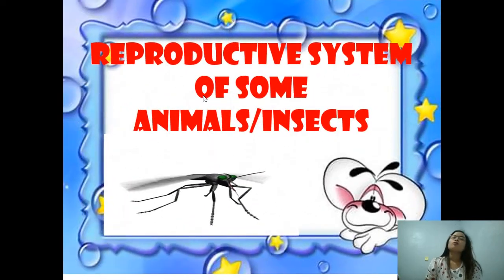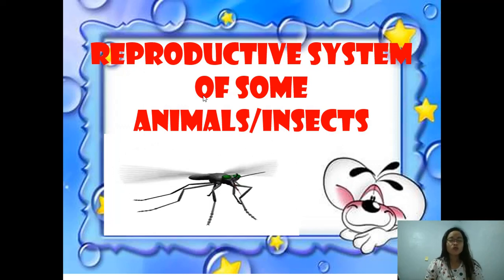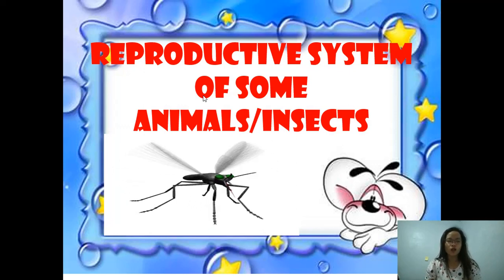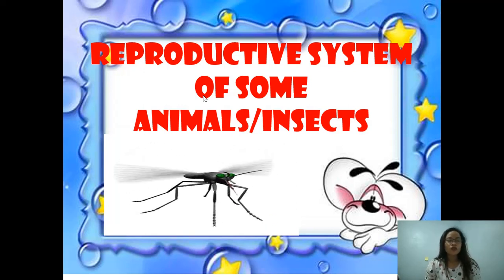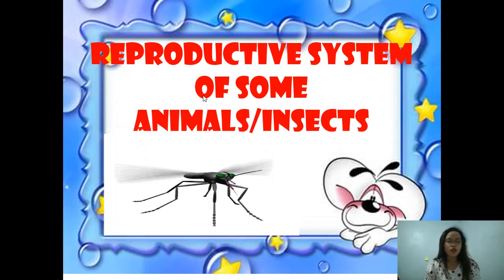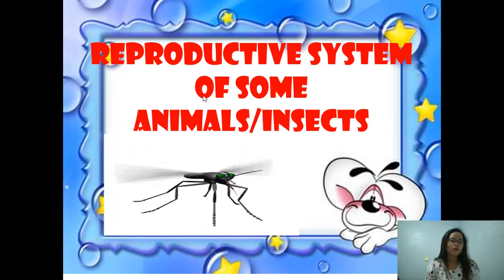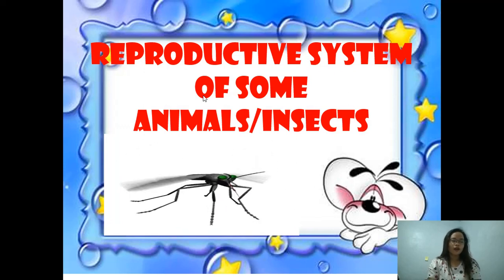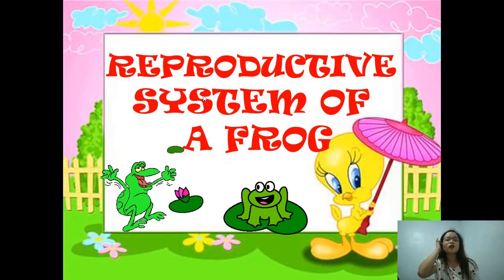Today we will talk about the reproductive system of some animals and insects. Most animals can only produce a new individual when two parents are present, so this is called sexual reproduction. Frogs, chickens, cows, and many other animals reproduce by sexual reproduction.